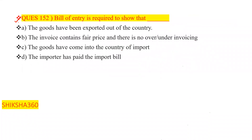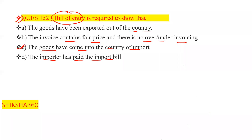Question Number 152: Bill of entry — what does it show? Options are: (A) goods have been exported out of the country, (B) invoice contains fair prices with no over or under invoicing, (C) goods have come into the country of import, (D) the importer has paid the import bill. The correct answer is option C — bill of entry shows the goods have come into the country of import.